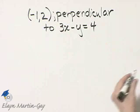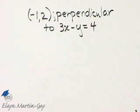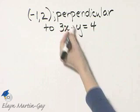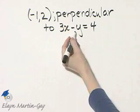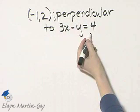So first of all, to find the slope of the line that we're looking for, we're given perpendicular to this graph. Let's find the slope of the graph of this equation.